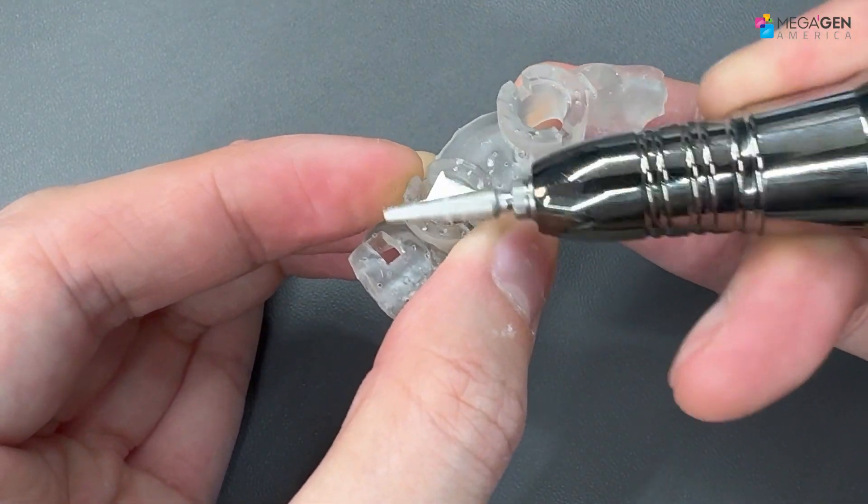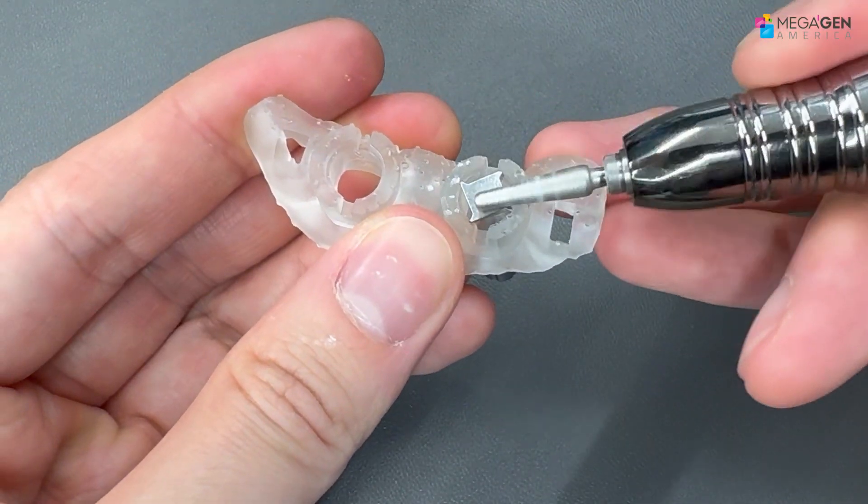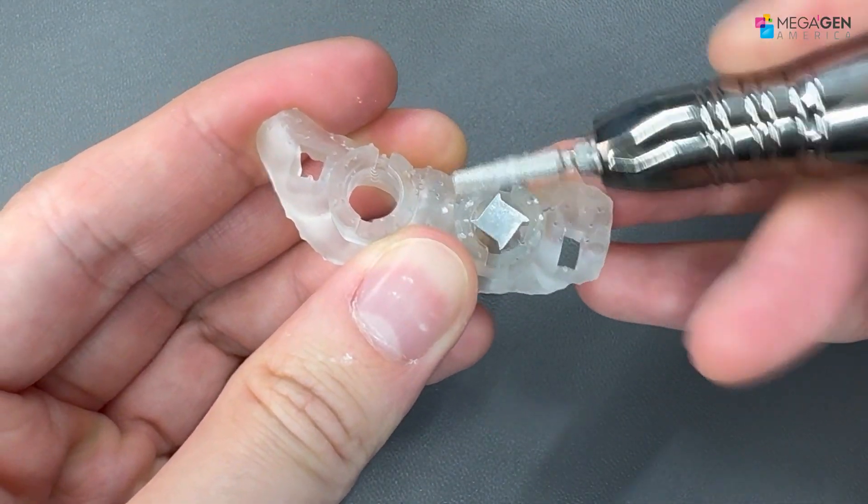When smoothing out the top portion of the drill hole, placing the stopper trimmer in the guide hole can protect the inner portion of the surgical guide.